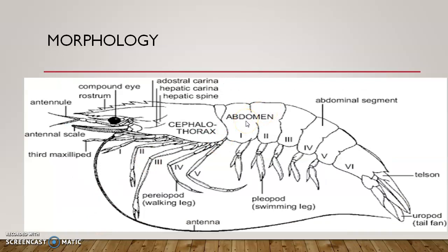The abdomen has about six segments. While in the cephalothorax, it is formed by the fusion of 13 segments — there are five cephalic segments and eight thoracic segments in the cephalothorax. Once again, the cephalothorax is formed by the fusion of 13 segments. The abdominal region has six segments.